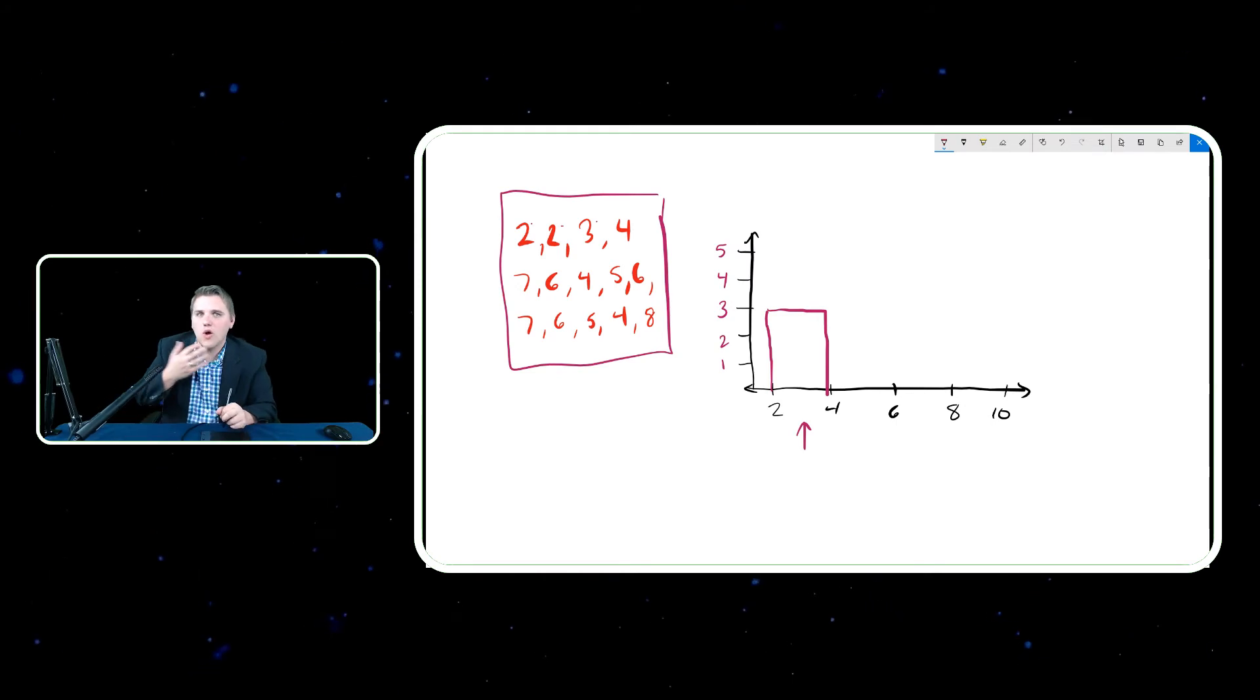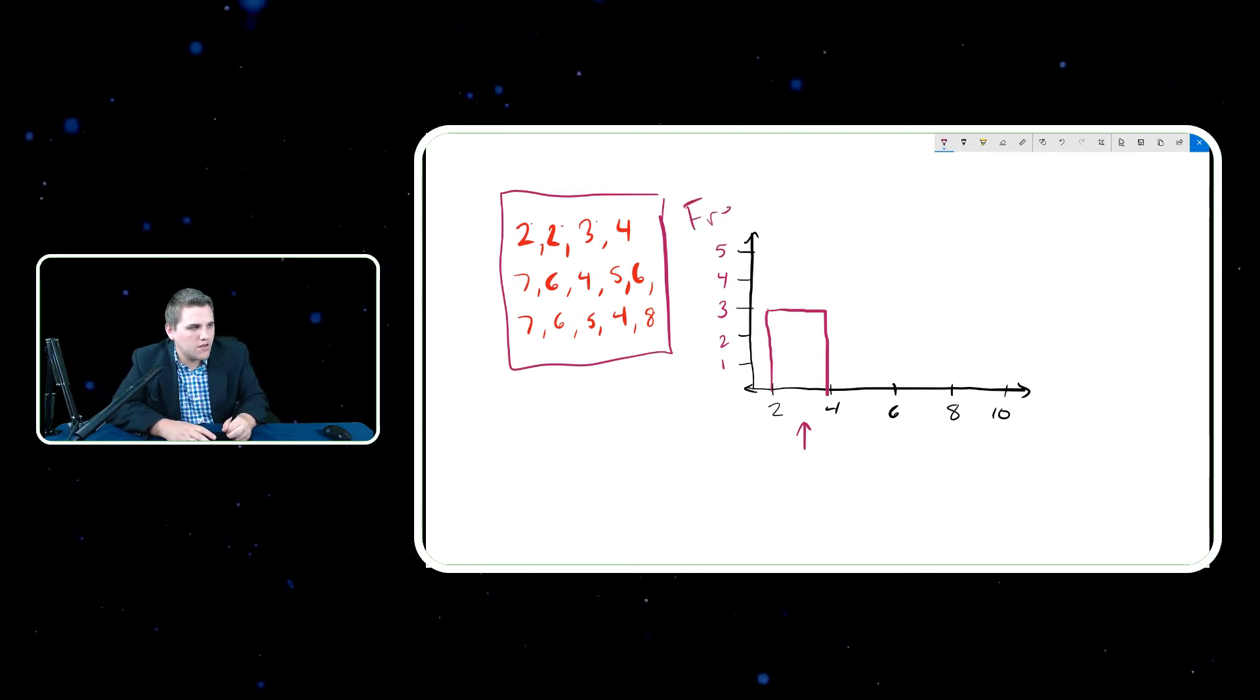And technically, you don't even need to label your y-axis in this case, because if you're telling that it's a histogram, it's already clear that this represents frequency. That is technically already assumed. Most people do. And then people would also label this as something like age, which is a numerical variable.